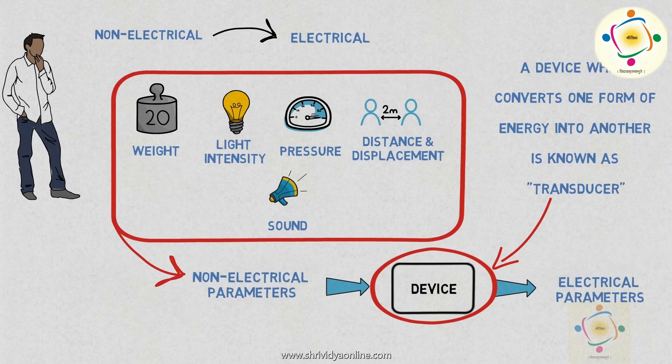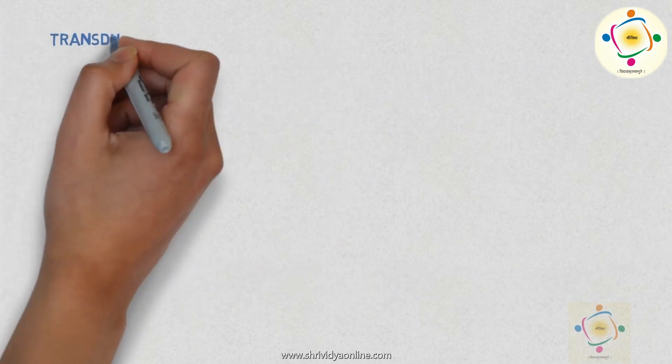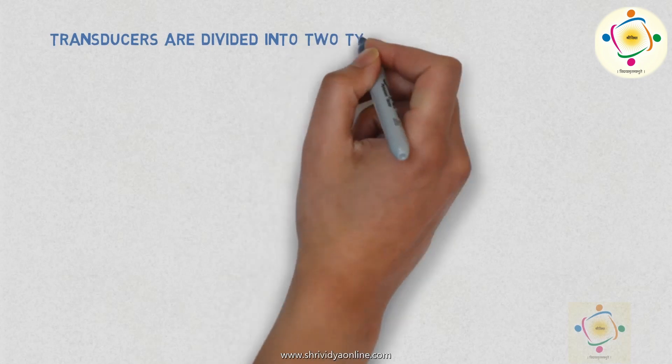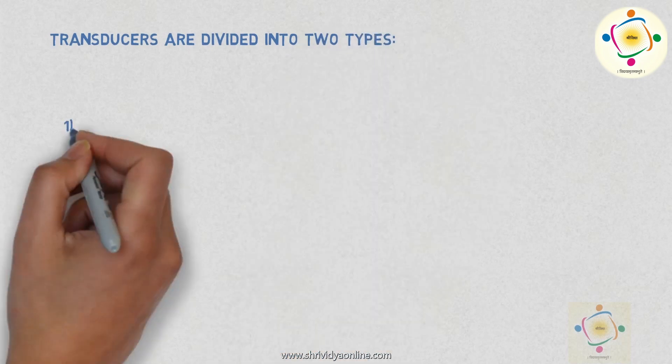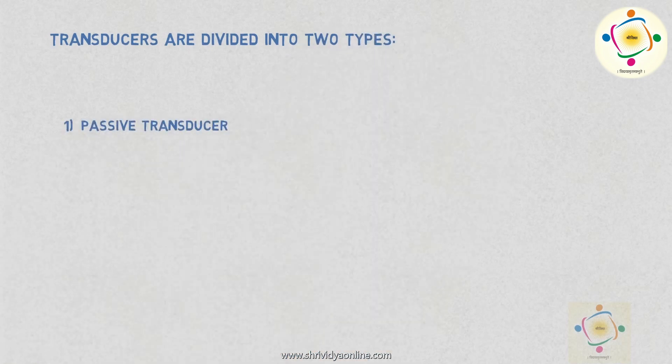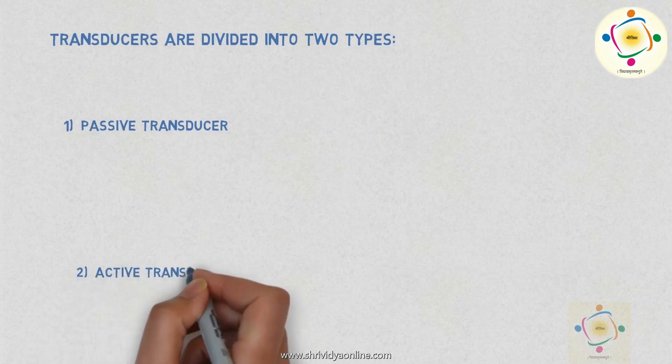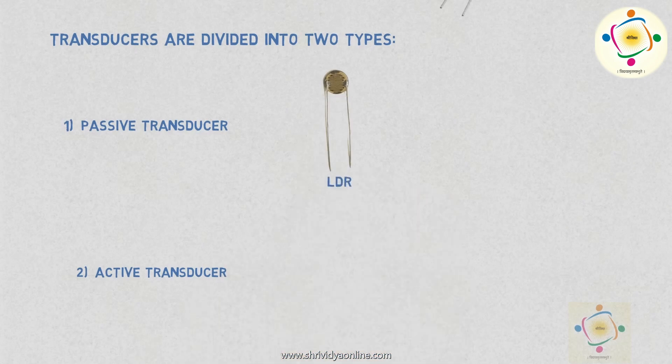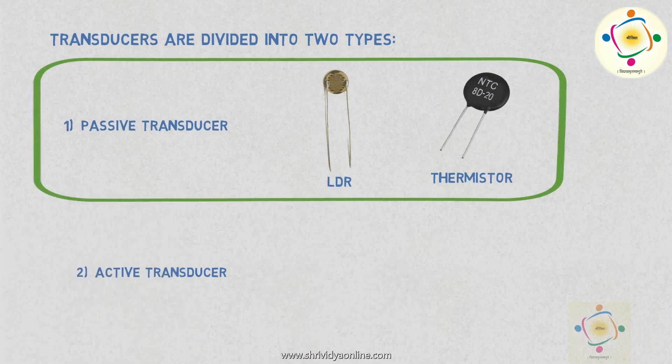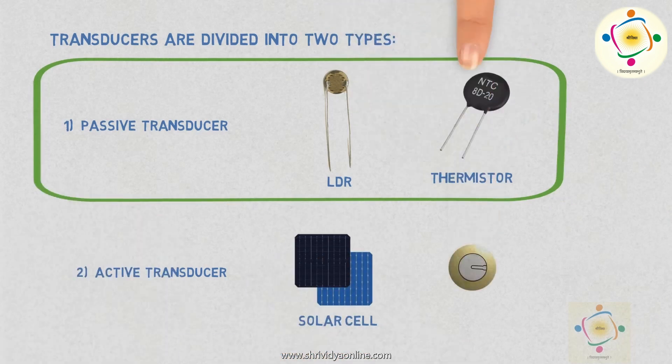There are so many transducers available. They are divided into two types. First one is passive transducers and second one is active transducers. The example of passive transducers are LDR, thermistor, strain gauge and example of active transducers are solar cell, piezoelectric crystals.